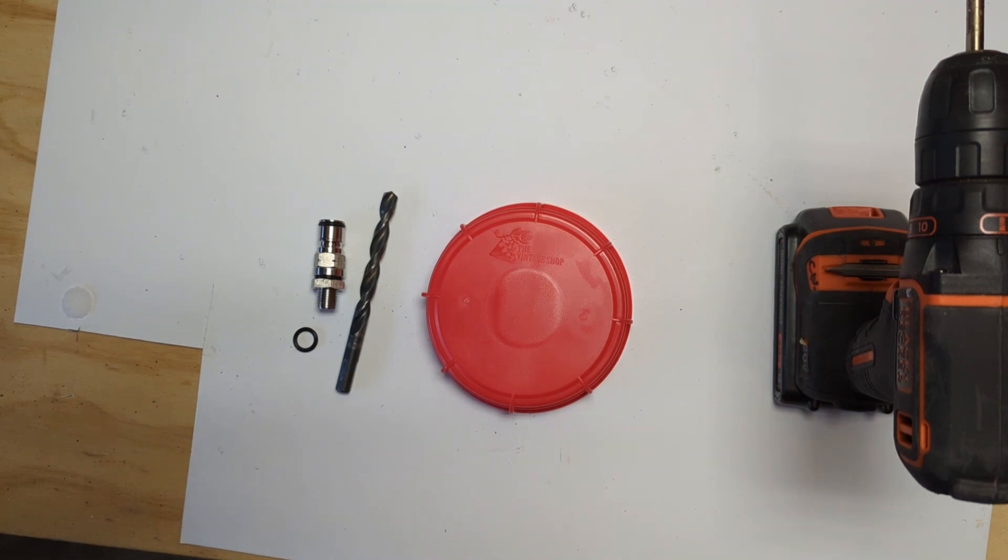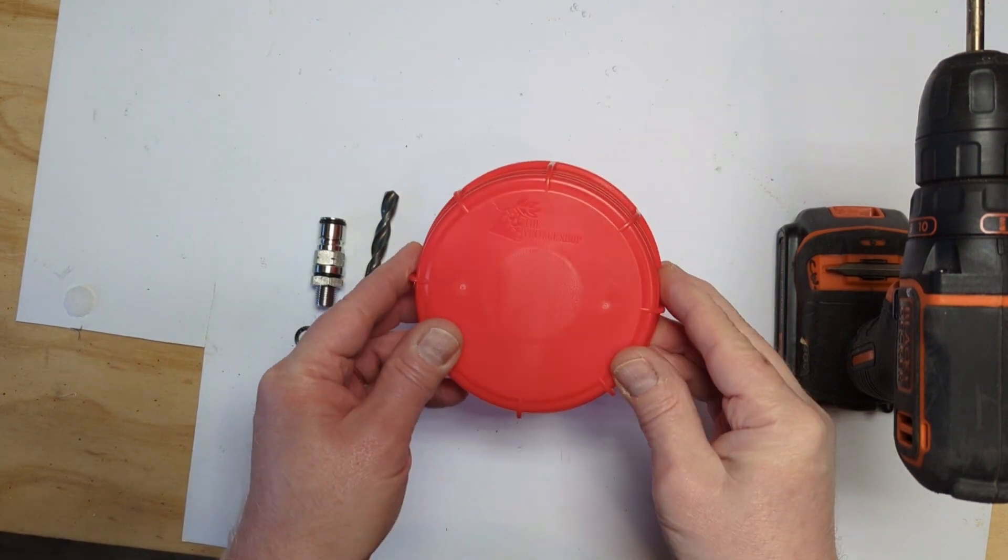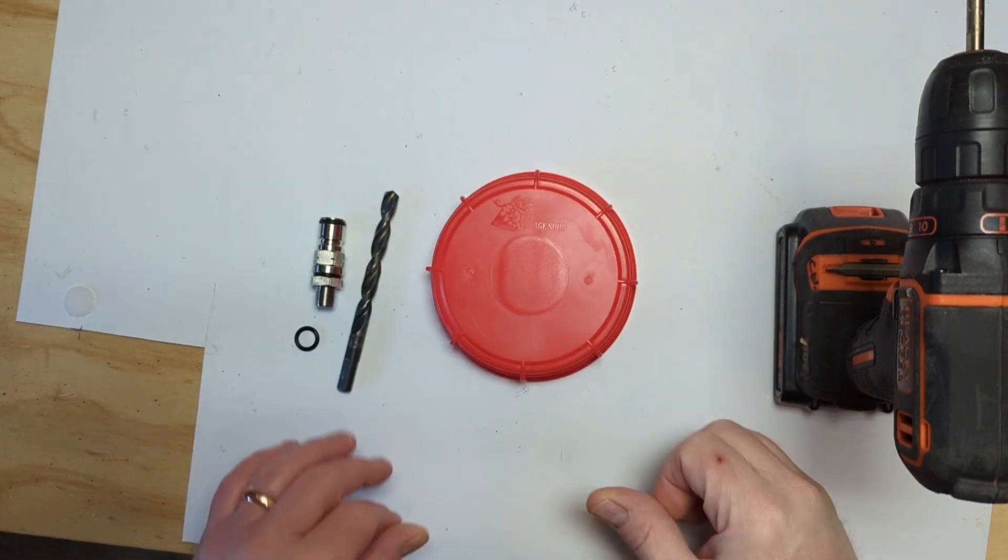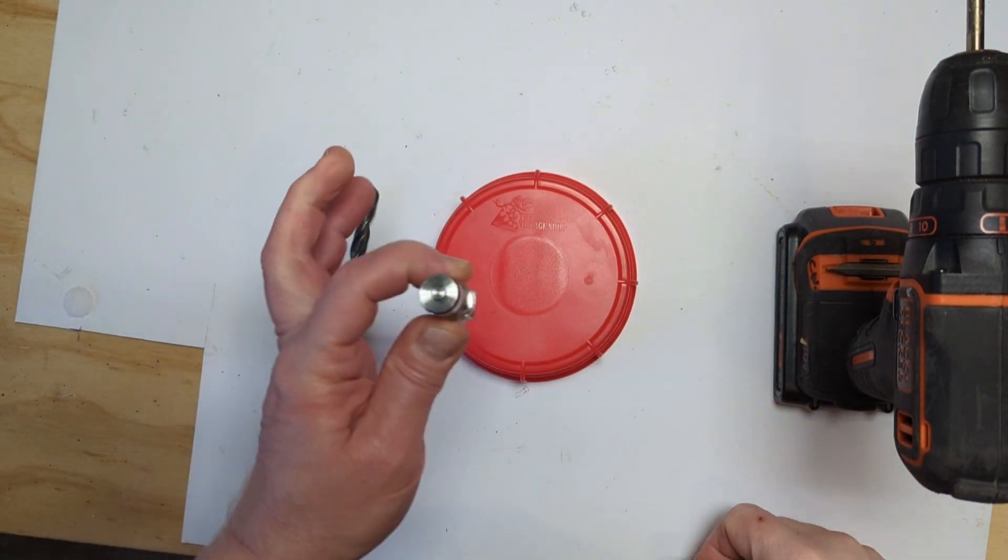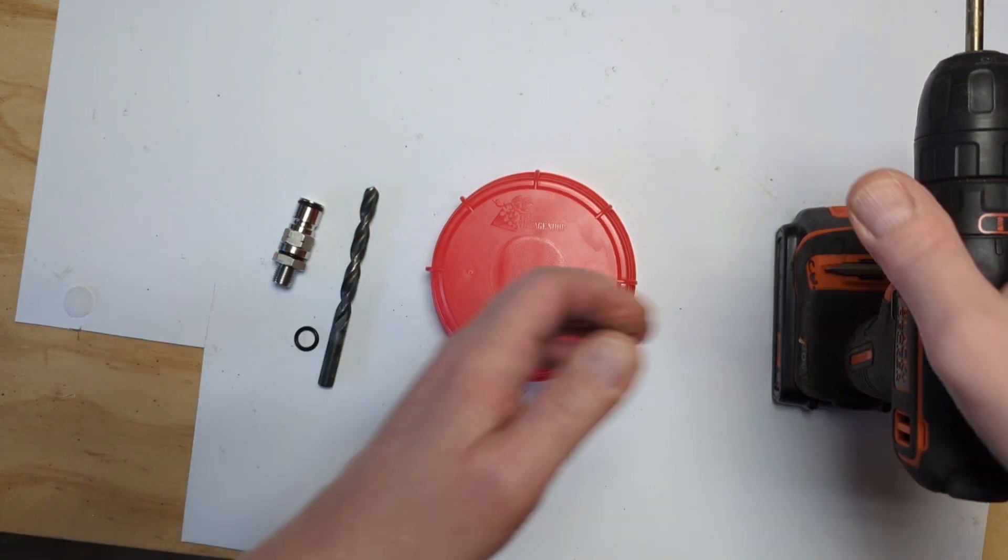But basically the concept is you take a solid Fermonster lid and drill a hole in it and you put a gas post in it and that's pretty much it.